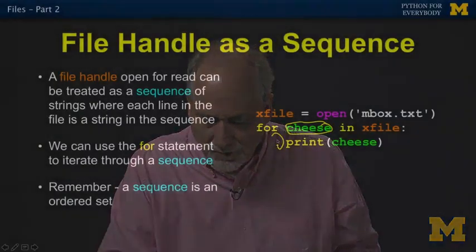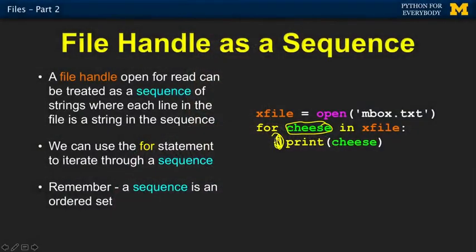If this file has 10 lines, this loop is going to run 10 times. Cheese is going to be the first line, the second line, third line, and so on. That's it — no while loop, no end of file, no nothing. It runs as many times as necessary, one time through for each of the lines in the file.